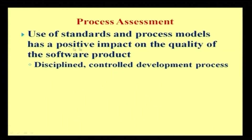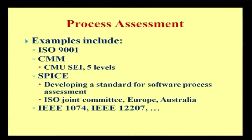Use of standards and process models has a positive impact on the quality of the software product. Following a disciplined, controlled development process over the entire SDLC phase ensures a major quantum of quality is maintained. Examples of quality standards we majorly follow include ISO 9000, CMM — where the Software Engineering Institute has come out with five different maturity levels — SPICE for software process assessment, IEEE 1074, and IEEE 12207 as software process assessment standards.